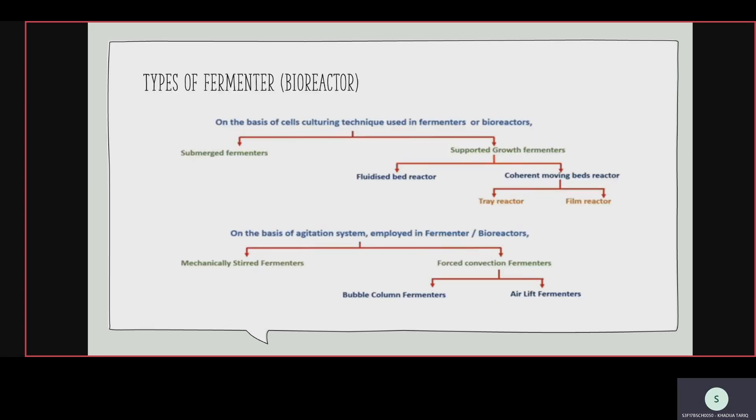Types of fermenters or bioreactors: on the basis of cells there are two types; on the basis of agitation there are also two types. On the basis of cells: number one is submerged fermenter; number two is supported growth fermenter. Supported growth fermenters are divided into fluidized bed reactors and coherent moving beds. Coherent moving beds have two sub-types: tray reactor and film reactor.